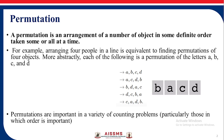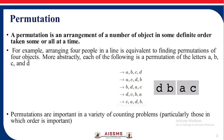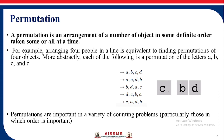Permutation is an arrangement of number of objects in some definite order, taken some or all at a time. For example, arranging four people in a line is equivalent to finding permutations of four objects. More abstractly, each of the following is a permutation of the letters A, B, C, D.